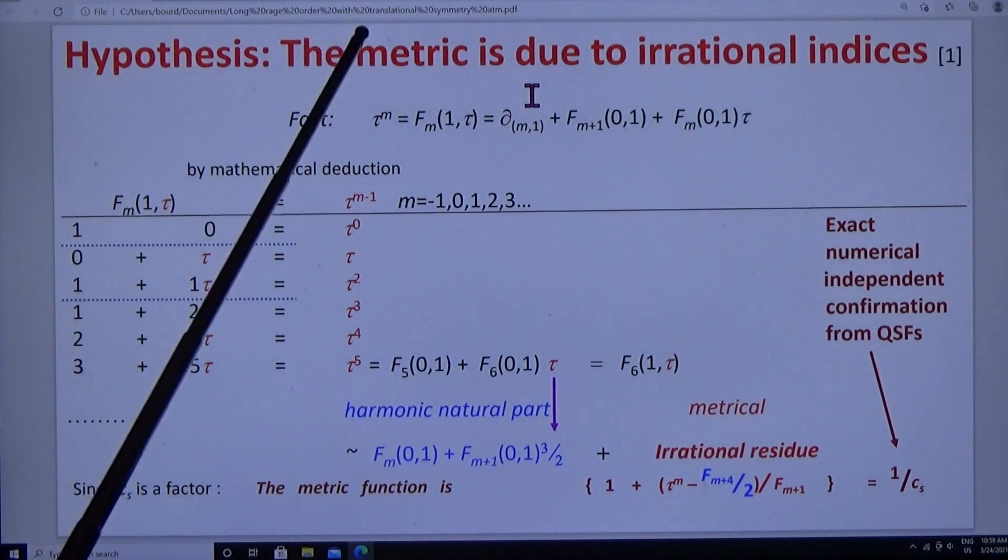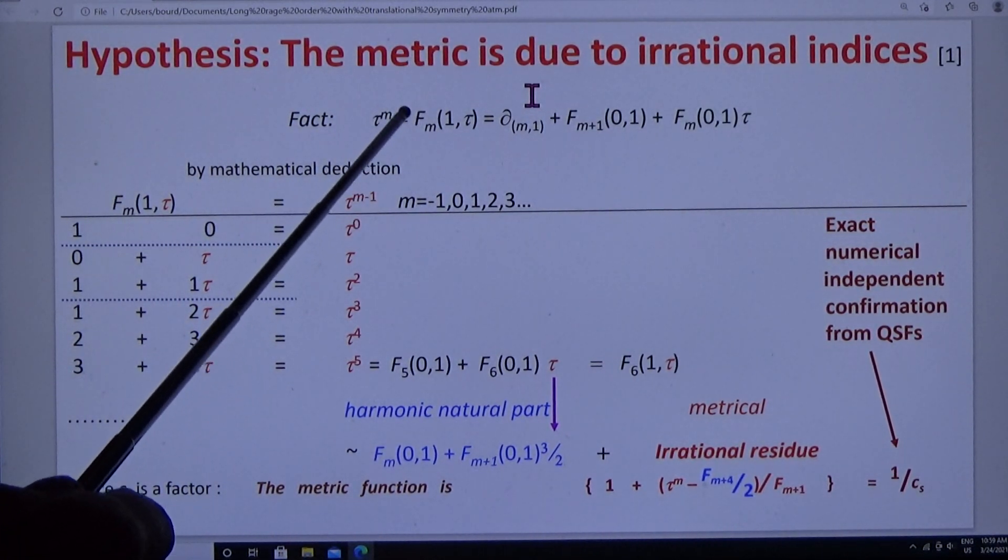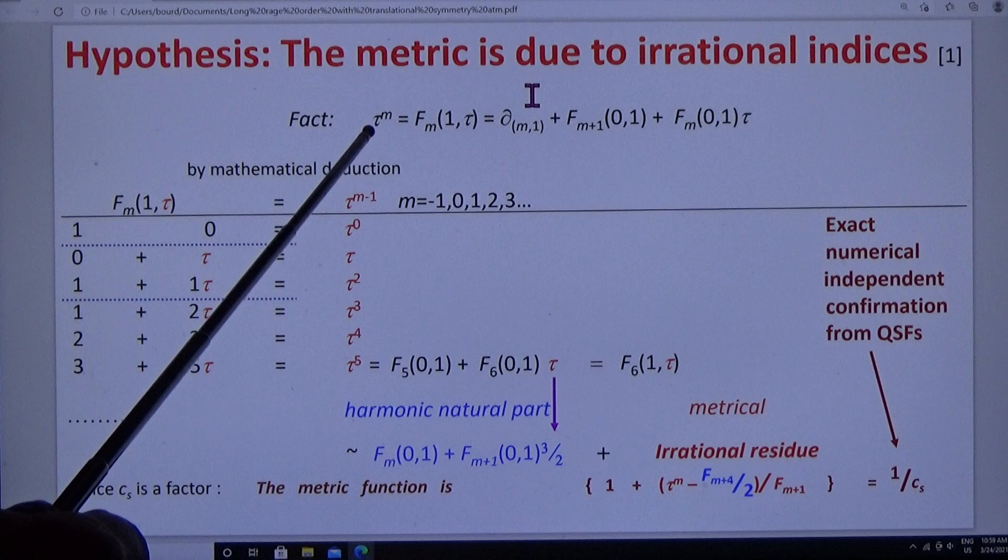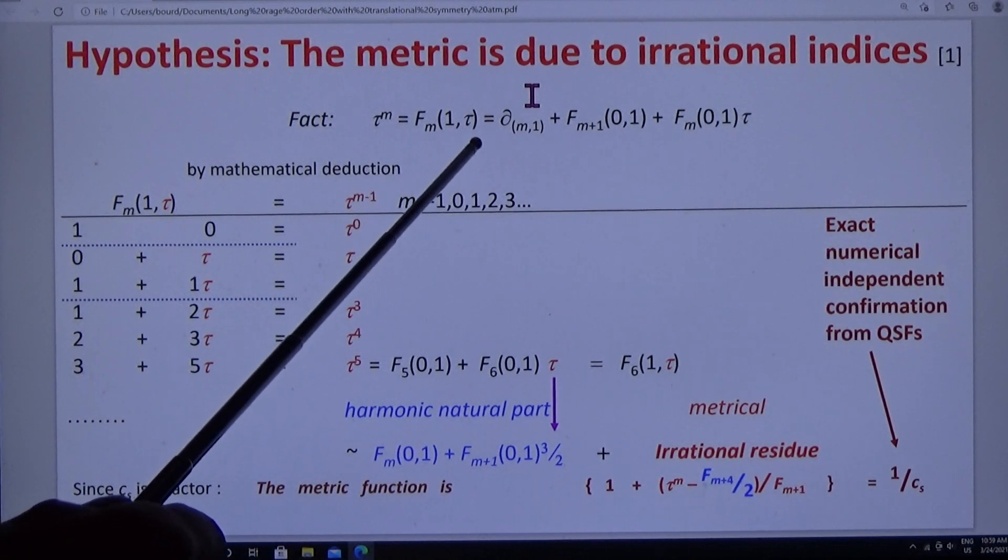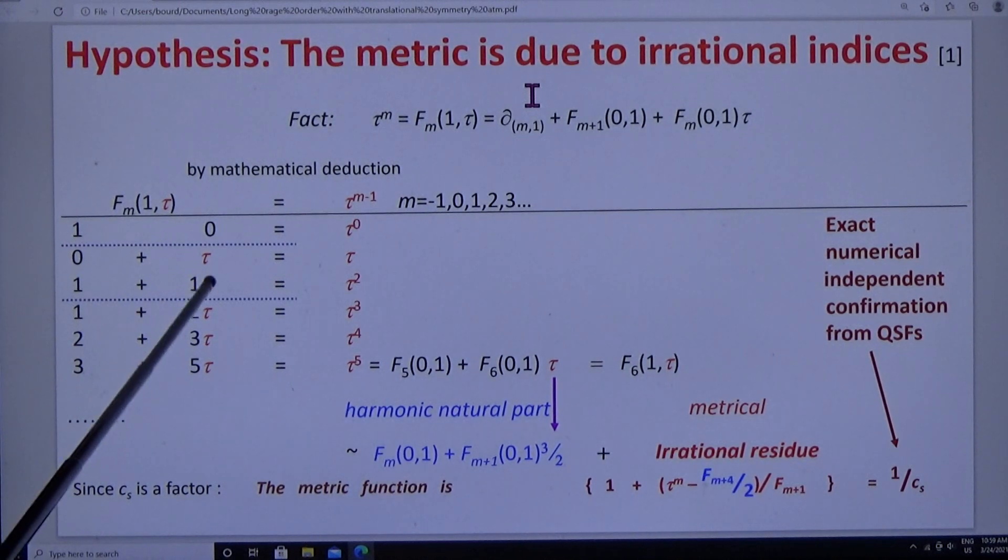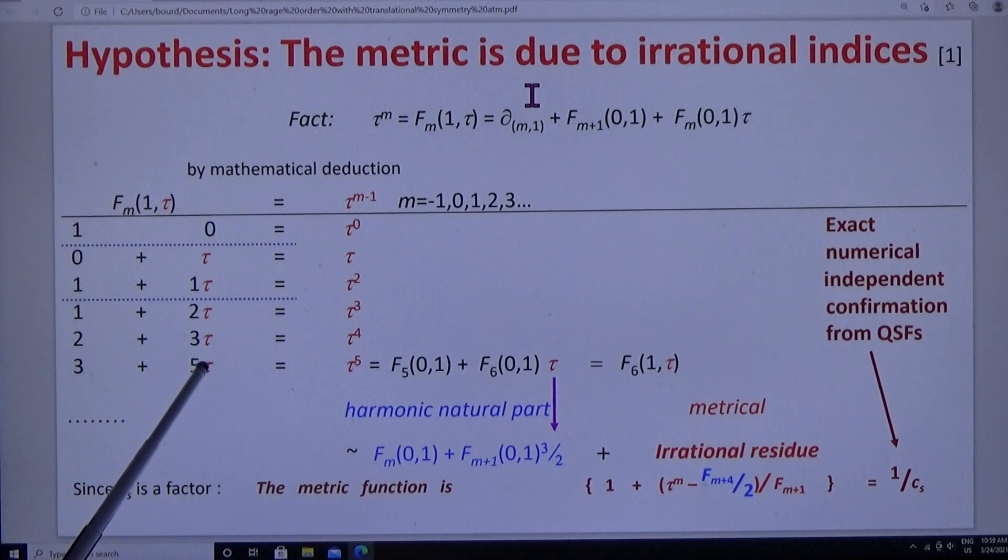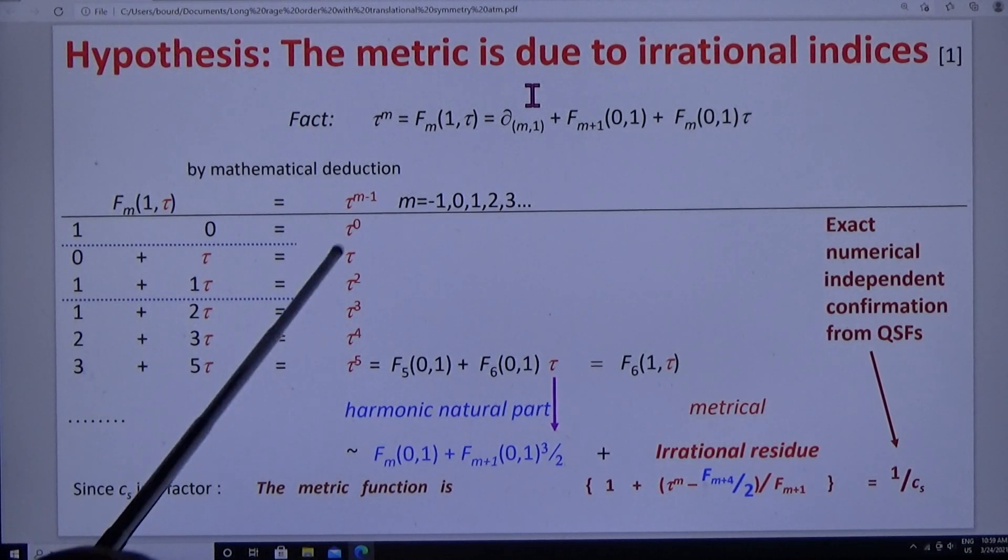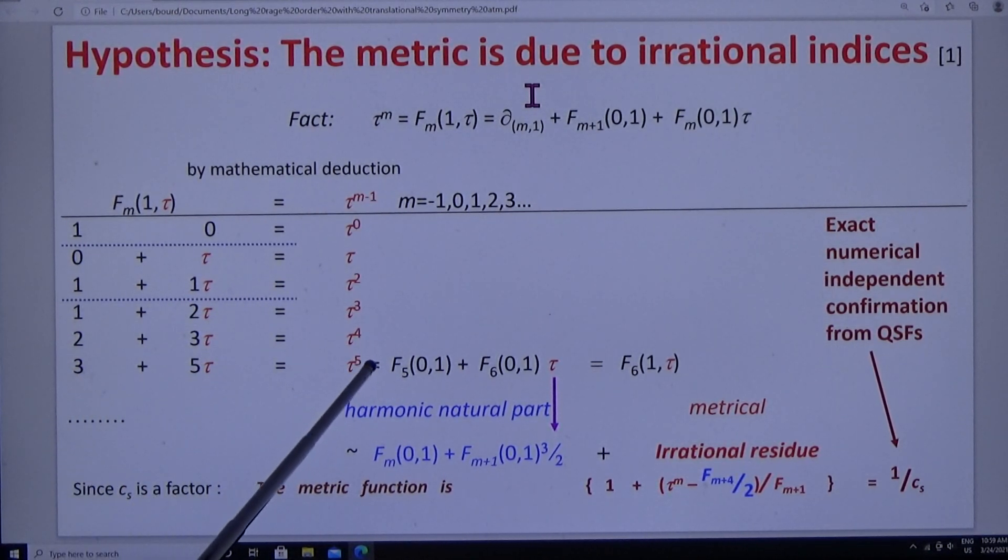We're going to come back and derive that in the next slide. It is the fact that this geometric series, which we found in the diffraction pattern, is equal to this Fibonacci sequence. Here it is: 1 tau, 1 plus tau, 1 plus 2 tau, 2 plus 3 tau, 3 plus 5 tau. Each term is the sum of the two preceding terms. And the fact is that this series is identical to the geometric series. You can prove that by mathematical induction.